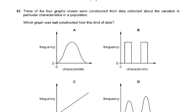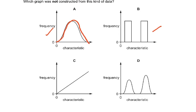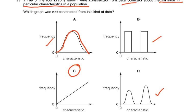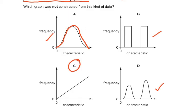Question number 33: three of the four graphs shown were constructed from data collected about variation in particular characteristics in a population. Variation is of two types: discontinuous — either you are a tongue roller or you are not — and continuous, like height, which gives a normal distribution curve. The question asks which graph was NOT constructed from this kind of data. The answer is C — you cannot have a graph where frequency just keeps increasing with the characteristic value. That is the wrong graph.